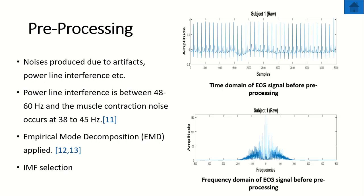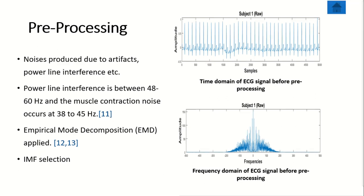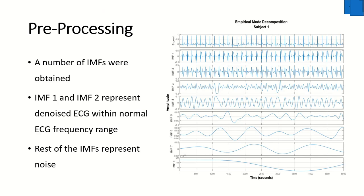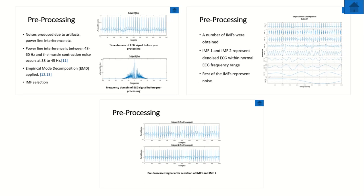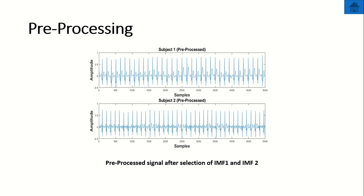The figure shows the time domain and frequency domain of the ECG signal before preprocessing. A number of IMFs were obtained. IMF1 and IMF2 best represented the ECG signal while the rest represented noise. Thus, IMF1 and IMF2 were selected. The figure shows the signal after preprocessing, after combining IMF1 and IMF2.